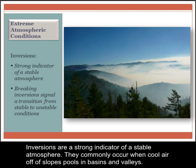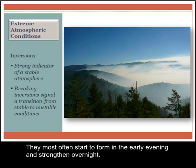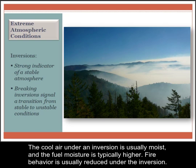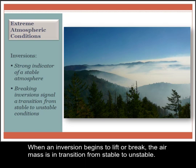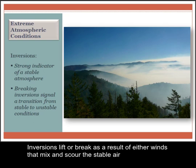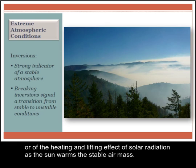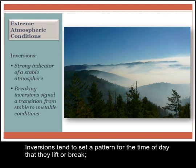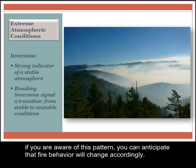Inversions are a strong indicator of a stable atmosphere. They commonly occur when cool air pools off slopes, in basins, and valleys. They most often start to form in the early evening and strengthen overnight. The cool air under an inversion is usually moist, and the fuel moisture is typically higher. Fire behavior is usually reduced under the inversion. When an inversion begins to lift or break, the air mass is in transition from stable to unstable. The behavior of a fire burning beneath an inversion may increase abruptly when the inversion is destroyed. Inversions lift or break as a result of either winds that mix and scour the stable air, or of the heating and lifting effect of solar radiation. Inversions tend to set a pattern for the time of day that they lift or break — if you are aware of this pattern, you can anticipate that fire behavior will change accordingly.